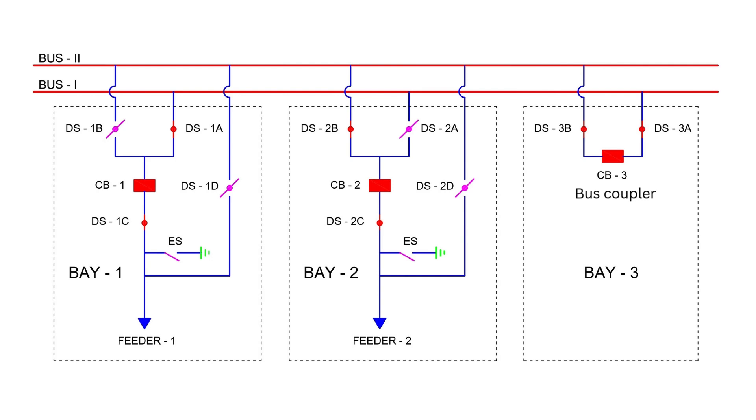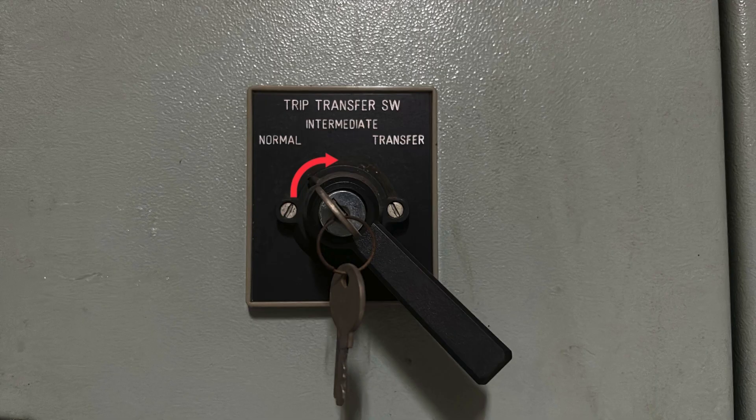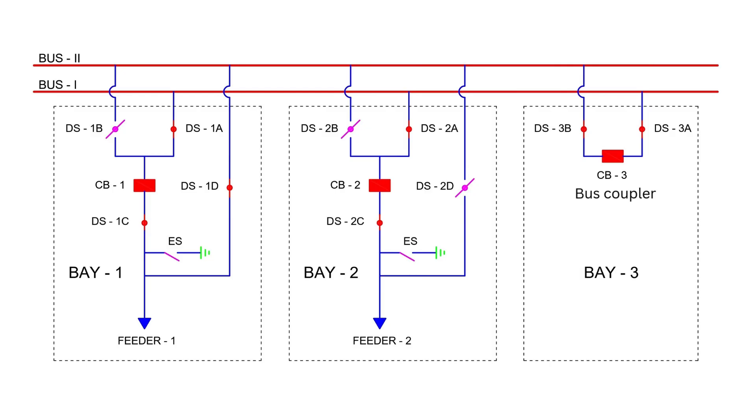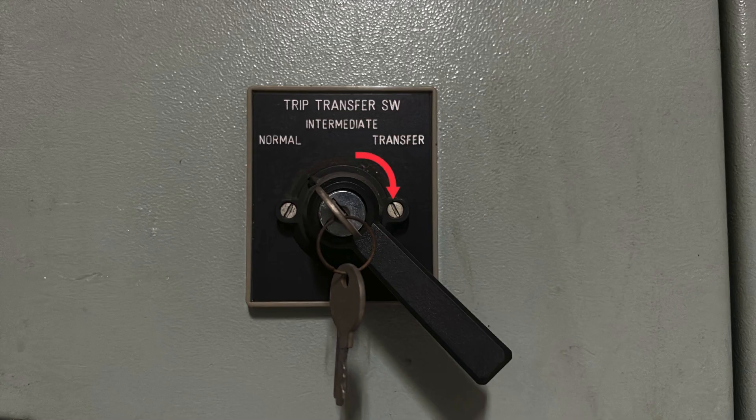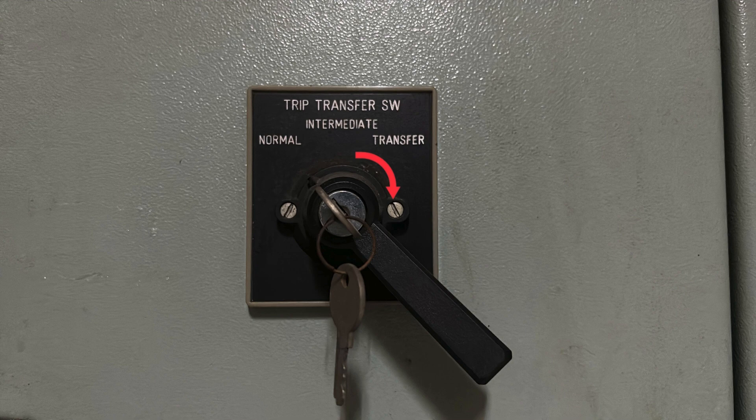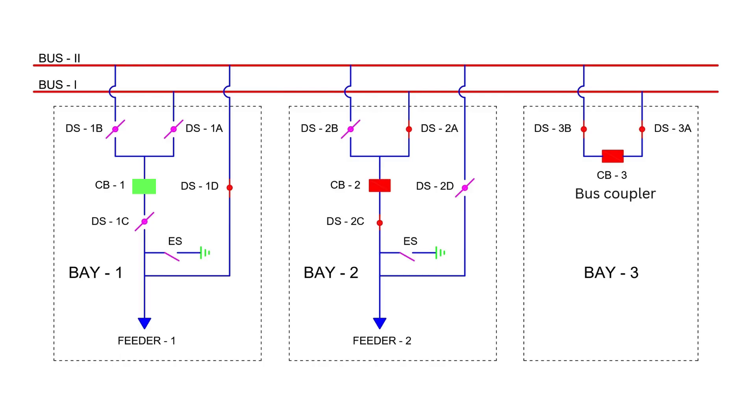Here's the sequence of operations. Transfer all feeders from bus 2 to bus 1 one by one. Ensure bus 2 is charged through CB3, with its isolators DS3A and DS3B closed. Confirm all transfer isolators like DS2D are open. Set the TTS of CB1 to the inter position. Close transfer isolator DS1D. Sequentially open DS1A and DS1C to isolate CB1 from bus 1. Set the TTS of CB1 to the transfer position. This process ensures uninterrupted power supply while CB1 is under maintenance.